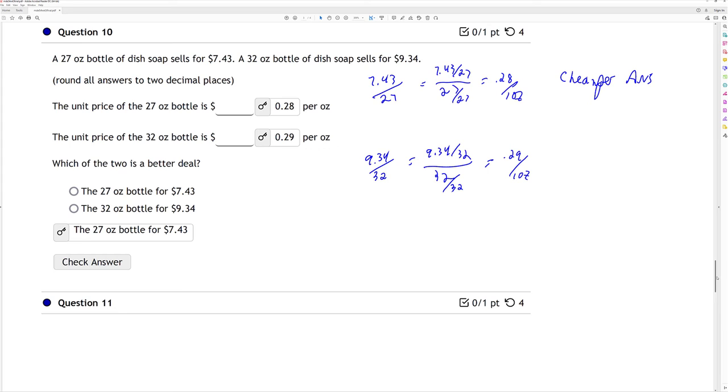Then I do the second one there. 32 ounces for $9.34, and I divide my numerator and denominator by 32, end up with $0.29 per ounce. So the cheaper one is 27 ounces for $7.43.